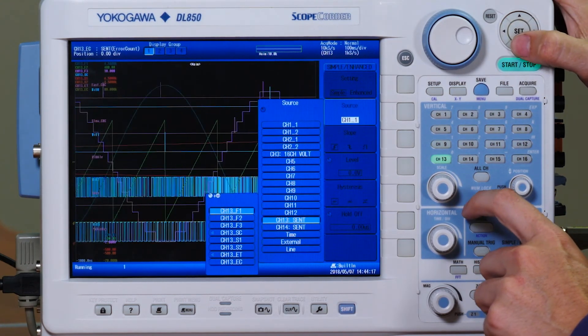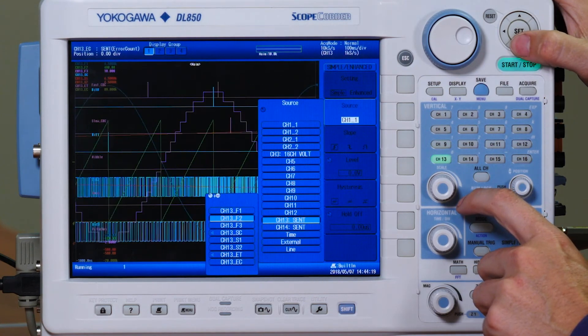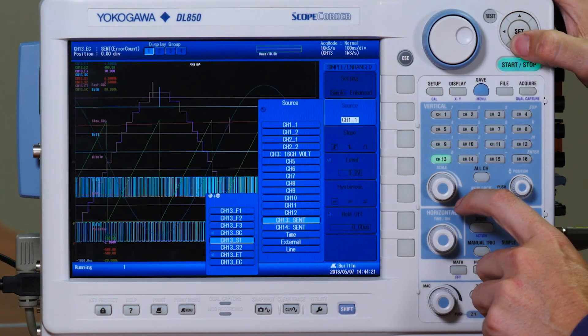You can see here we have our channel 13 fast, fast 2, fast 3, and our slow channels.